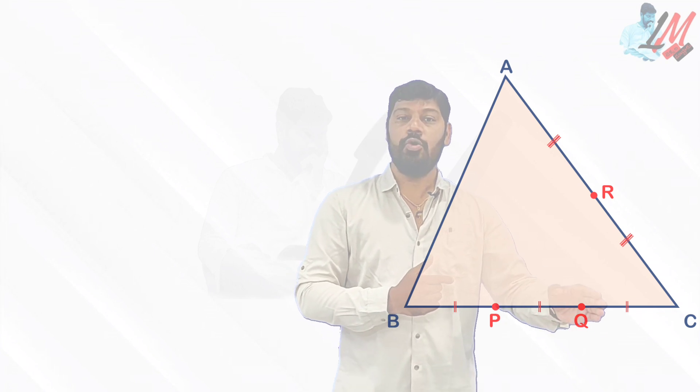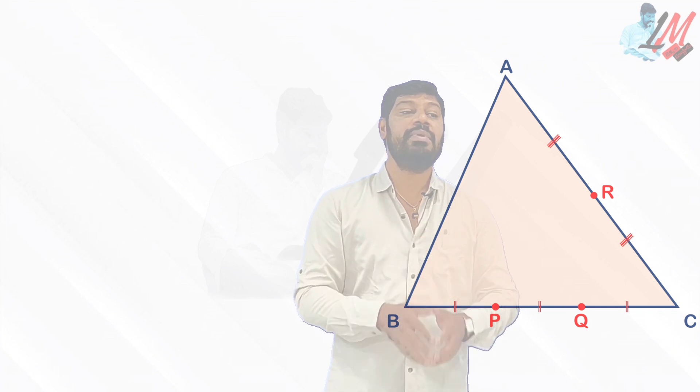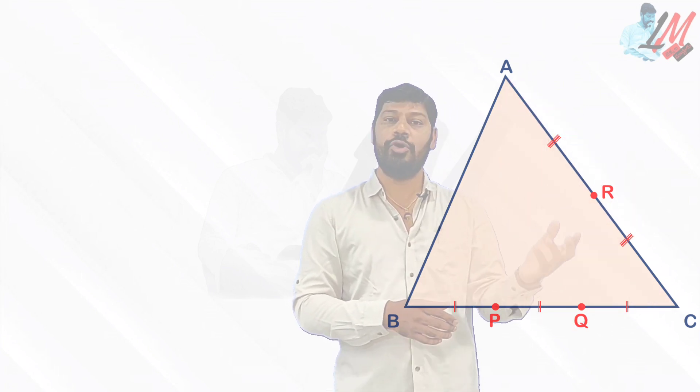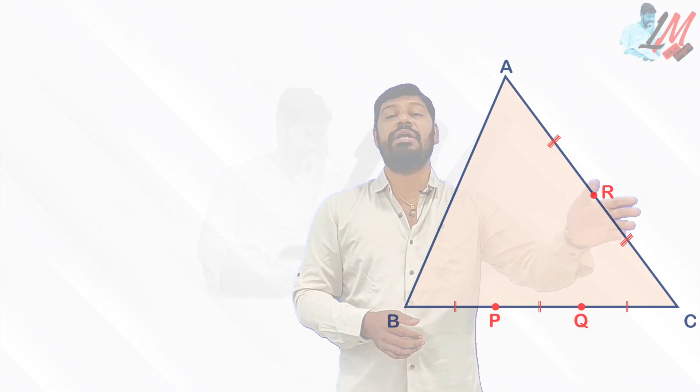Similarly, R, a point was taken on side AC such that R bisects AC. What do you mean by that? R is going to be the midpoint. So P and Q are trisection points, R is the midpoint.